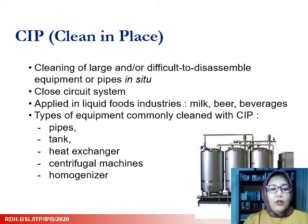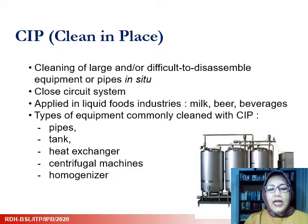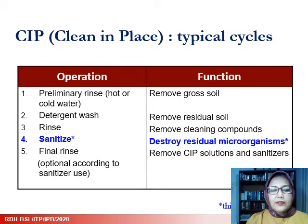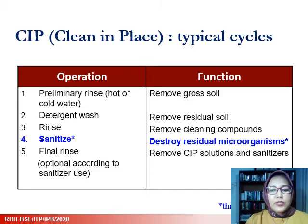The fourth method is CIP — Clean In Place — used for large or difficult-to-disassemble equipment that must be cleaned in situ. It is a closed-circuit system applied in various food industries. Equipment commonly cleaned with CIP includes pipes, tanks, heat exchangers, centrifugal machines, and homogenizers. The typical CIP cycle consists of a preliminary rinse with hot or cold water to remove gross soil, a detergent wash to remove soil, rinsing to remove cleaning compounds, sanitizing to destroy residual microorganisms, and a final rinse when necessary.